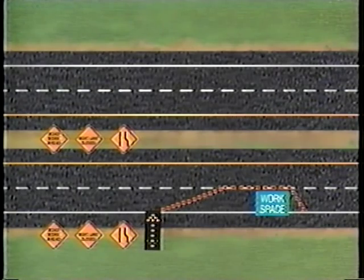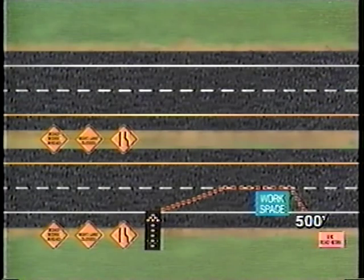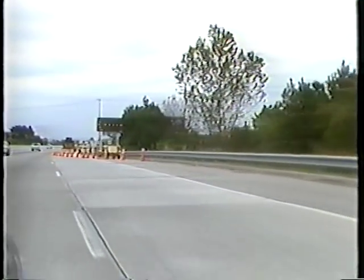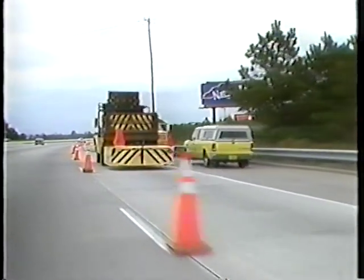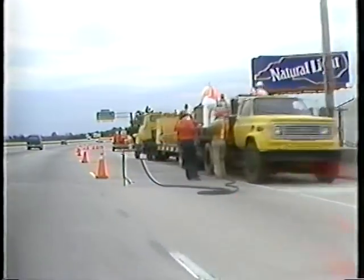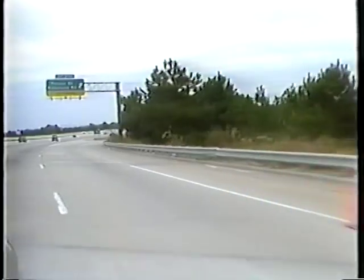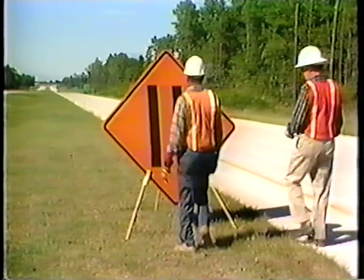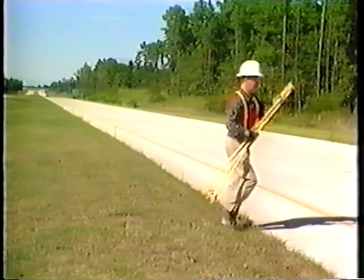The next element installed is a downstream taper of 100 feet minimum. The last element, the end road work sign, is then installed 500 feet from the workspace. Finally, the work vehicle can be moved into the workspace. Evaluate traffic controls by driving through the work zone after all devices are in place, remembering to put yourself in the place of the unfamiliar driver who is not anticipating your presence. After the project is completed and all workers, materials, and equipment are off the roadway, the traffic control devices are removed in reverse order of installation.